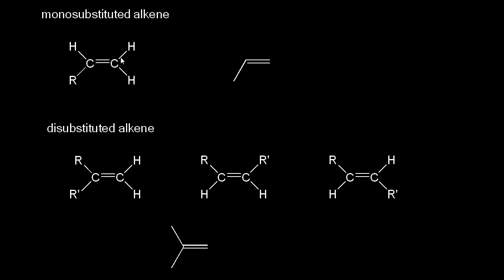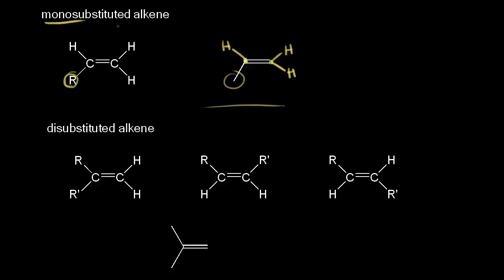You can classify alkenes according to their degrees of substitution. If you take ethene, take a hydrogen off, and add on an R group, you now have a monosubstituted alkene. With the hydrogens drawn in, this carbon has two hydrogens and this carbon has one, with an alkyl group — a methyl group — coming off of this carbon.